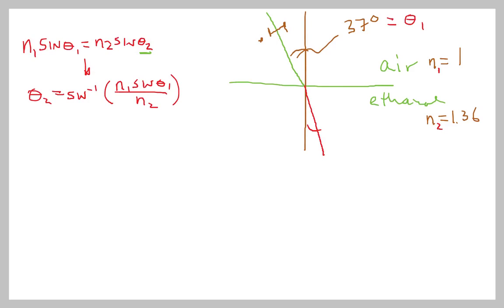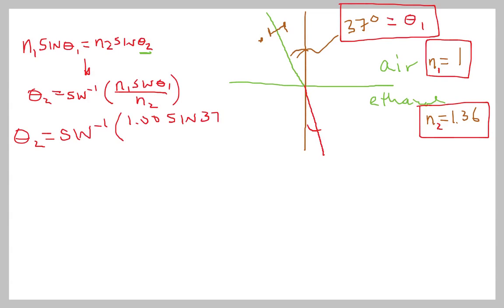And we have all the variables, right? We said that N1 is equal to 1, N2 is equal to 1.36, and theta 1 is equal to 37 degrees. And so when we make the substitutions, it looks like this: arc sine, N1 is 1.00, then it would be the sine of 37 degrees, and that's all over N2, which is 1.36 in the parentheses, and theta 2 is equal to 26.3 degrees, keeping three significant figures.